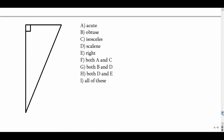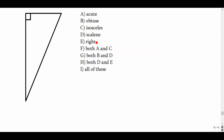Here we obviously have a right triangle — that's pretty obvious by this little box here. And there's nothing else on the triangle, so if there are no other markings, we assume it's scalene — we assume all sides are different. So maybe this is like three, this is four, and this is five. So this one will be called scalene and right — D and E. That will be our best answer.